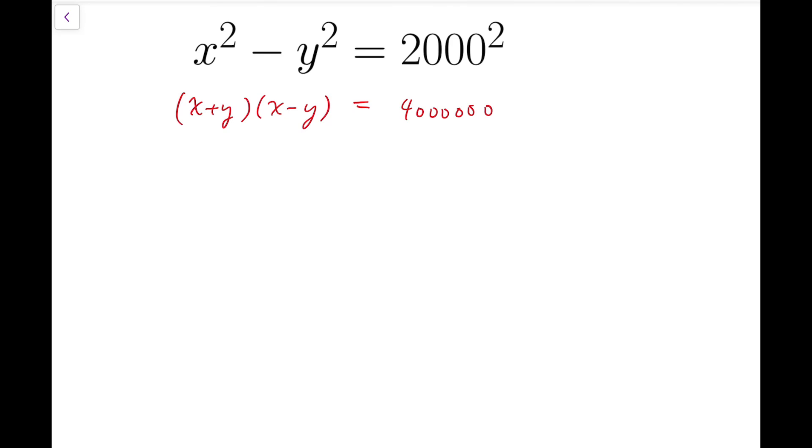Because x and y are integers, the sum and differences are both integers, and now we have two integers, the product with 4 million, so that should be only finitely many cases.